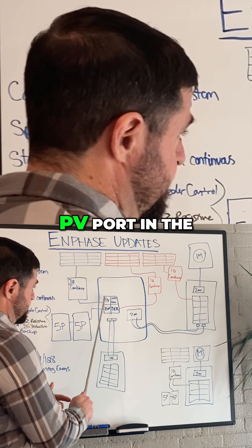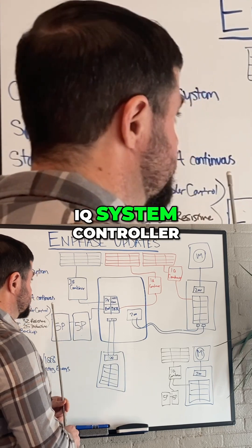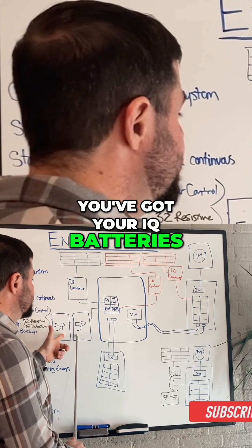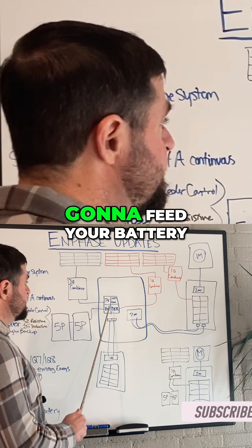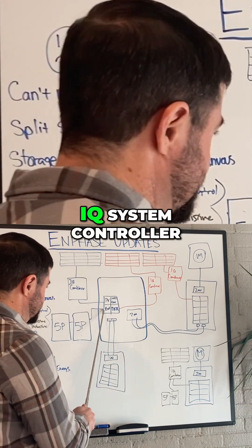That output feeds the PV port in the IQ system controller. Next, you've got your IQ batteries. In this case we're doing 5Ps, the current generation. That's going to feed your battery port in the IQ system controller.